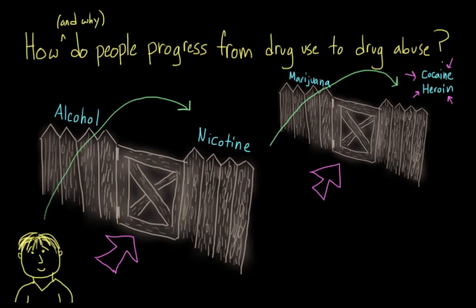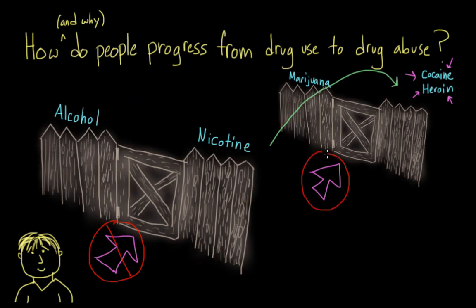The implication of all of this seems to be that if you can prevent people, specifically teens and preteens, from experimenting with smoking and drinking and marijuana use, then they will never move on to harder drugs. And this is the basis of a lot of anti-drug programs in the U.S. that are targeted at preteens.